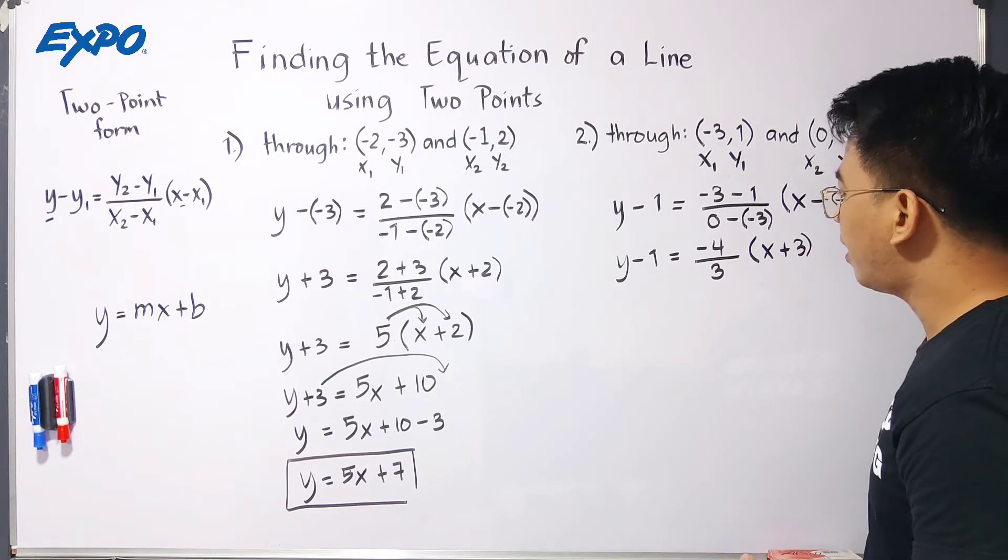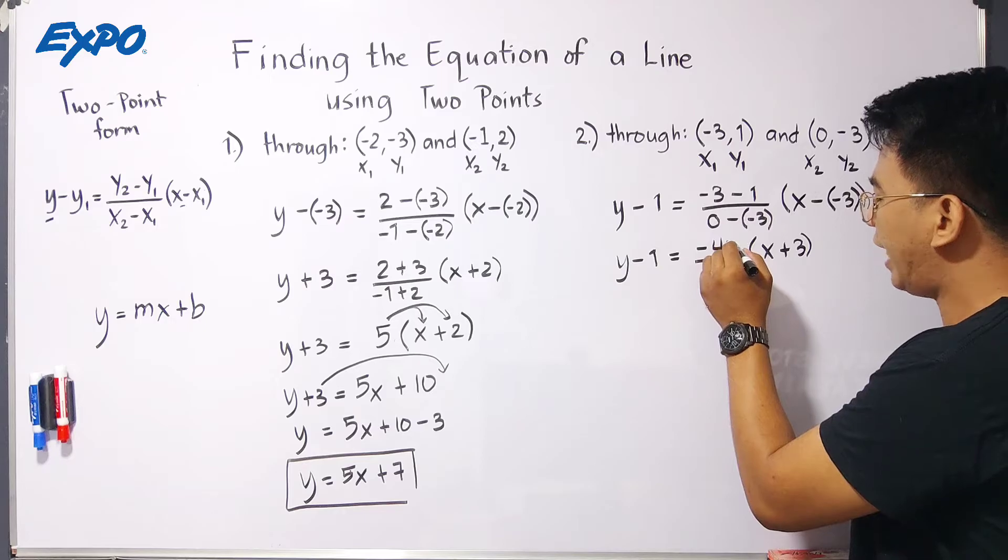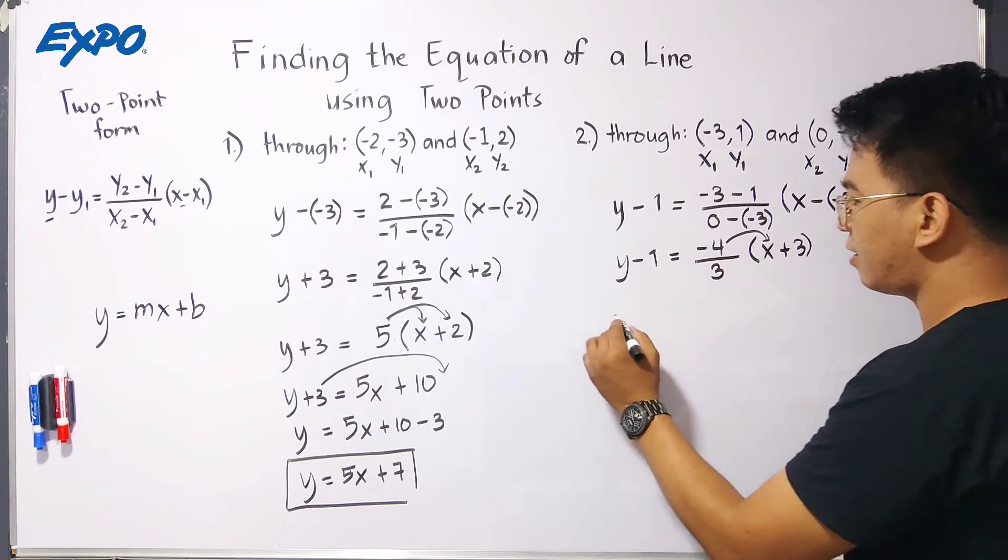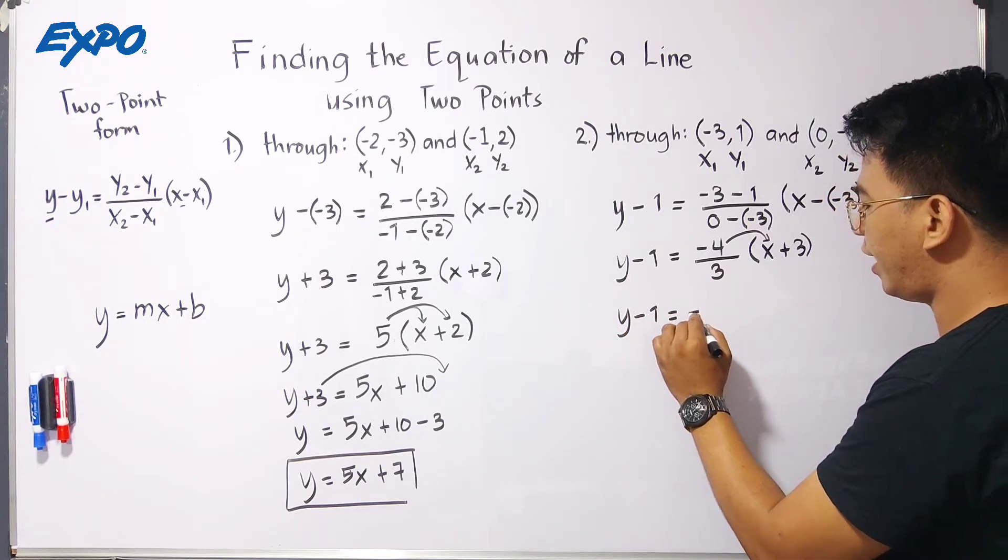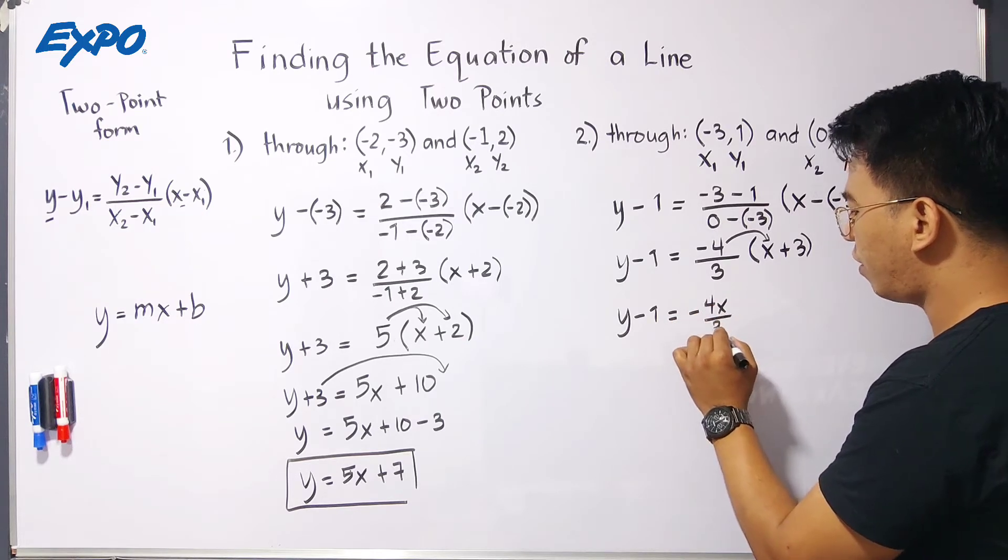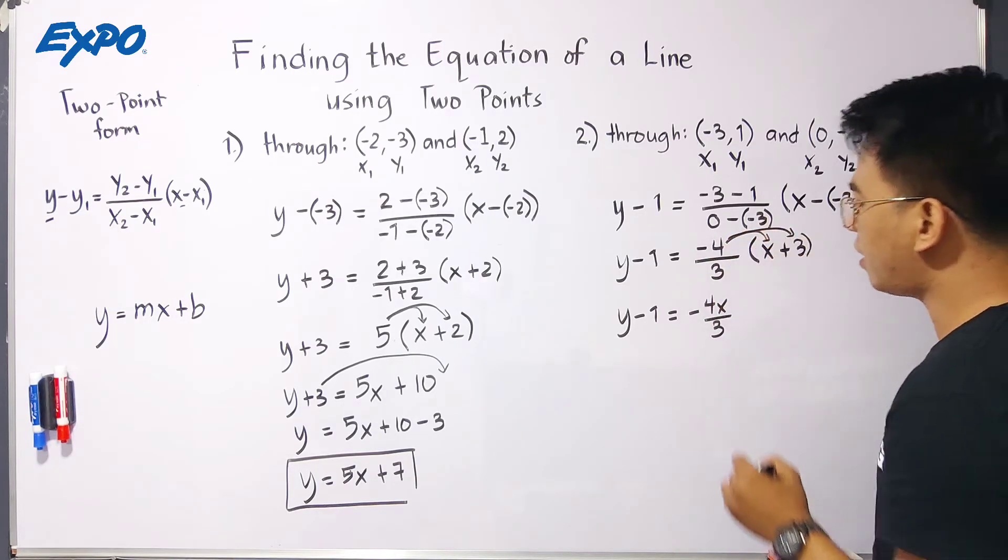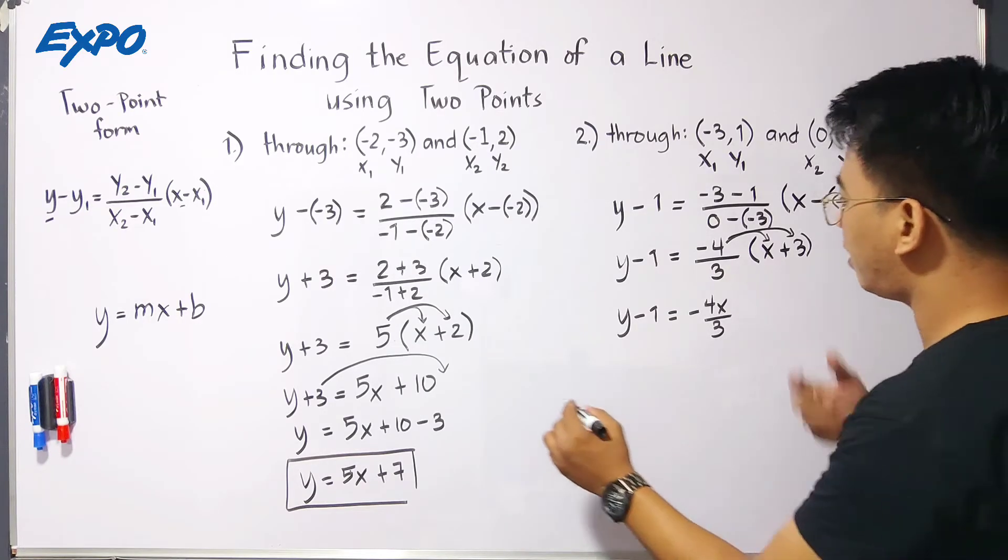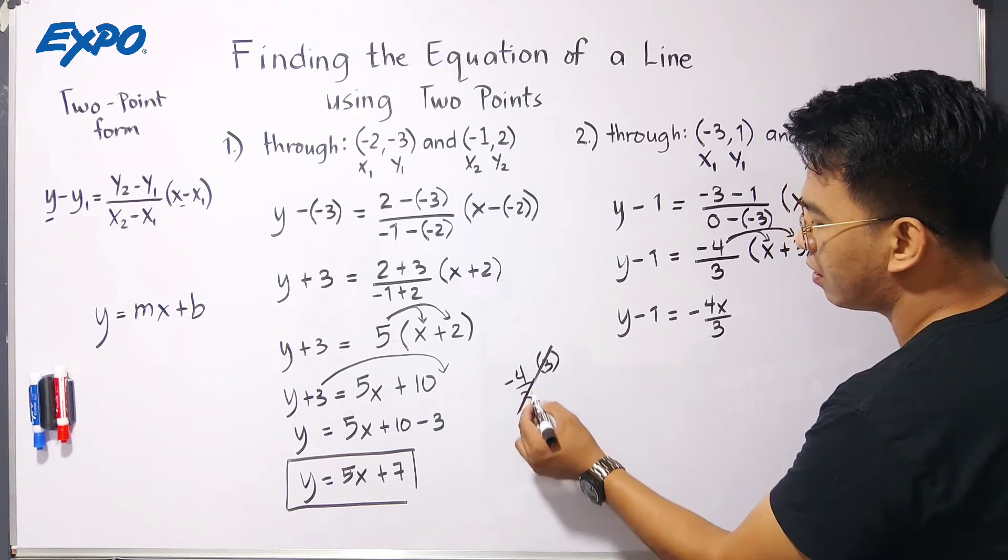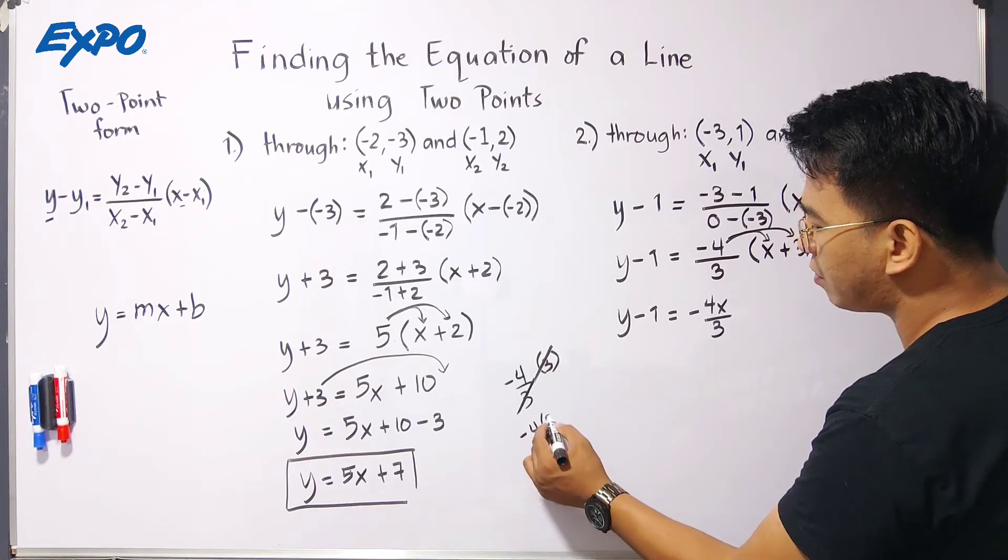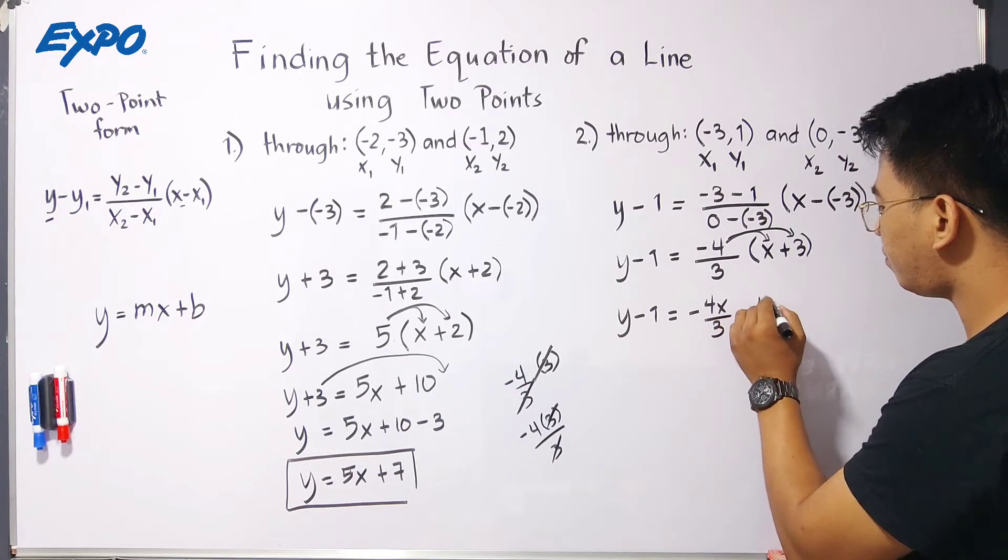What's next here is this. We will try to multiply it first, using the distributive property. Negative 4 over 3 times x. That is, we'll copy this. Y minus 1 equals this one. We have negative 4 x over 3. For this part, let's multiply this negative 4 over 3 to this. As you can see, when we multiply negative 4 over 3 by 3, notice we can cancel this out. We have negative 4 times 3 over 3. Cancel that. So, what we have is simply negative 4.